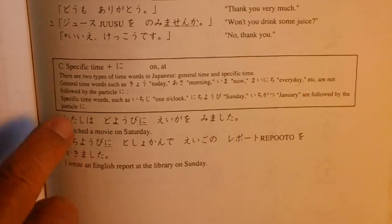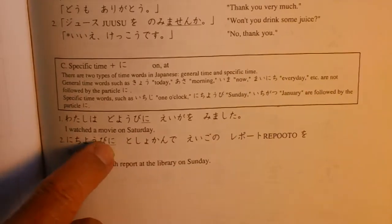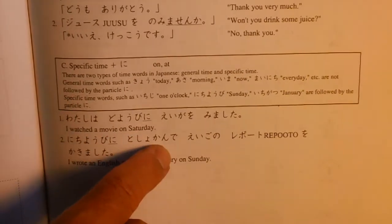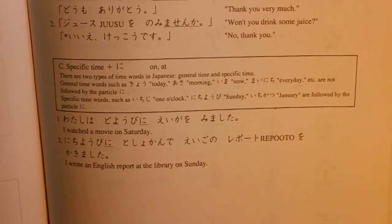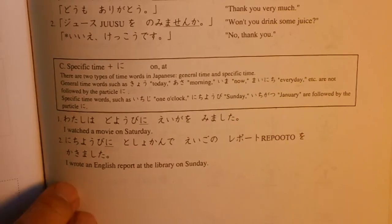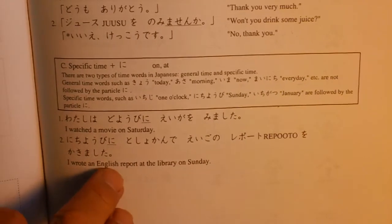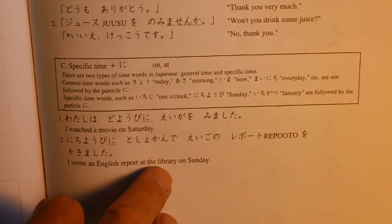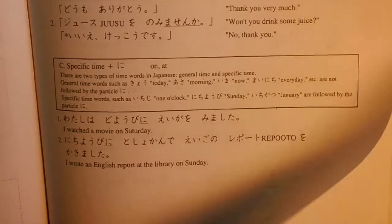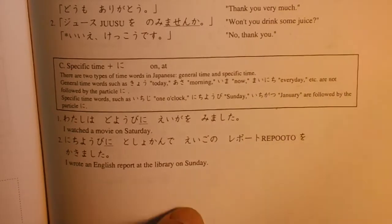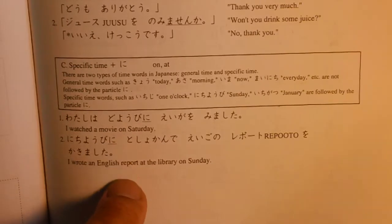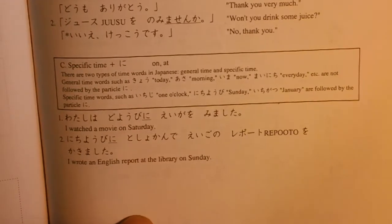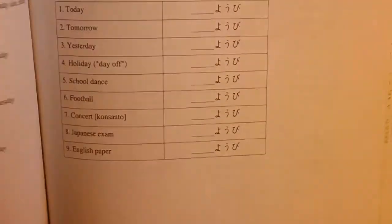日曜日に図書館で英語のレポートを書きました。— I wrote an English report at the library on Sunday. Okay, so 日曜日に — on Sunday.